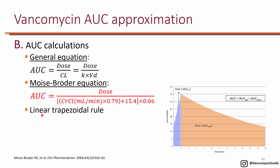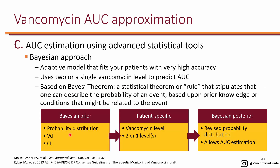Once you get levels in patients, you can also calculate the area using the linear trapezoidal rule, which we're not going to cover in this course. Another approach — and what the new 2019 IDSA guidelines actually recommend — is the Bayesian approach. Bayesian software is becoming readily available and affordable. It uses an adaptive model that fits your patient with very high accuracy, and these models can use either a single level or two levels. Using two levels is more accurate, but even a single vancomycin level is very accurate in predicting AUC.